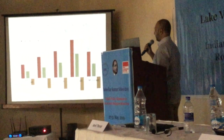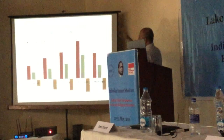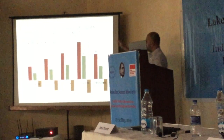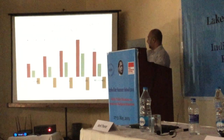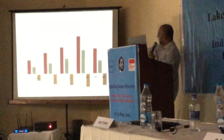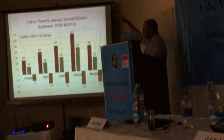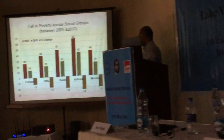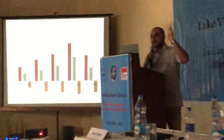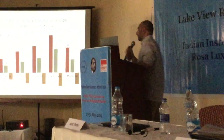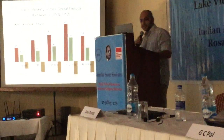Looking at poverty by social groups across these two time periods, poverty incidences are high among Dalits, Adivasi Dalits, Muslims, then OBCs, and then the upper caste. These have come down over the period — a substantial reduction — but the relative difference has remained. The tide has raised all boats, but all boats have risen in the same manner, not relatively differently.